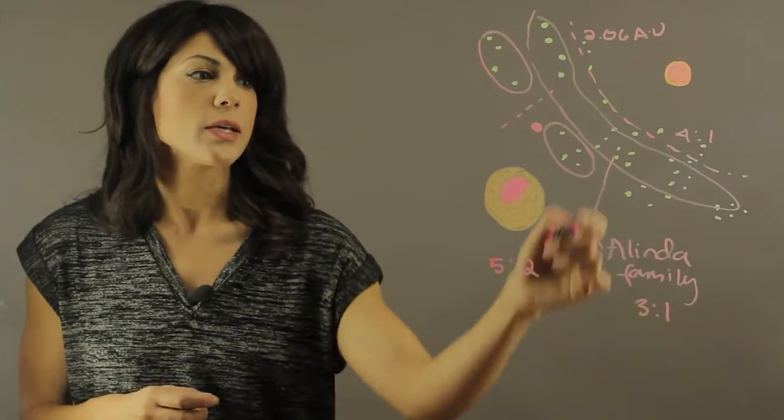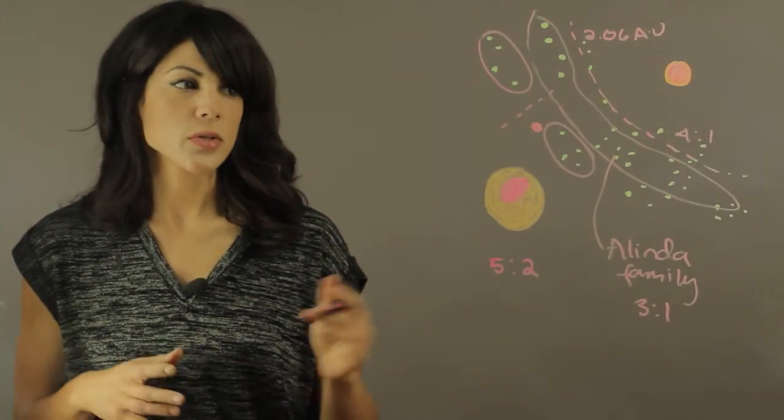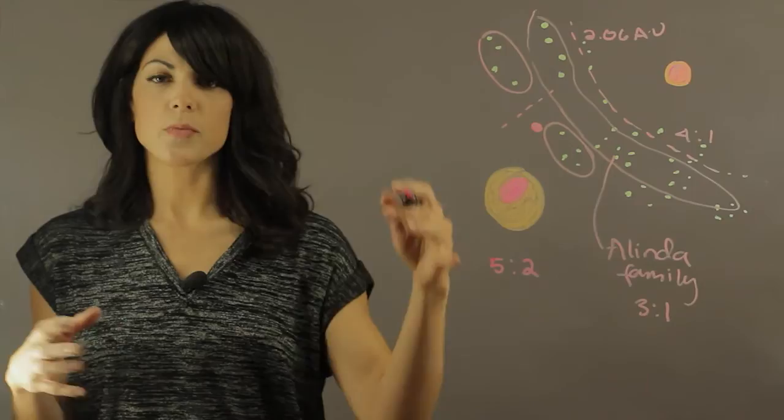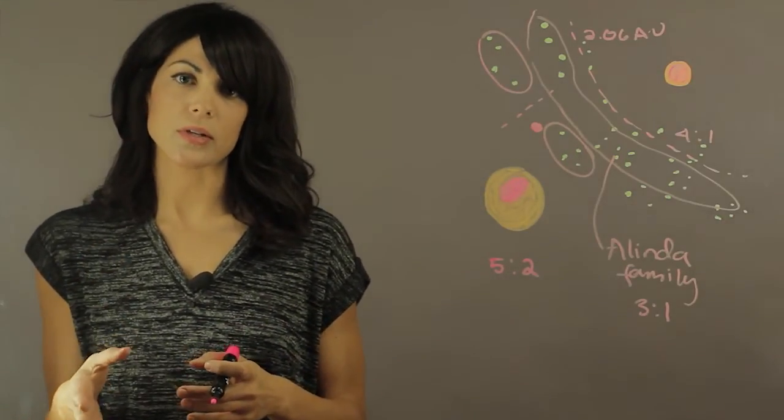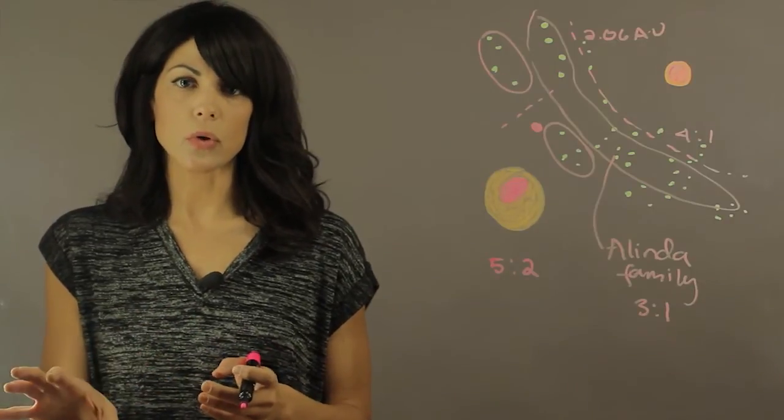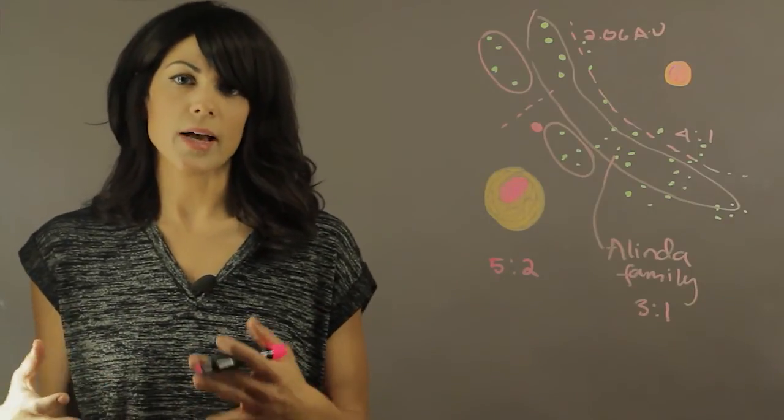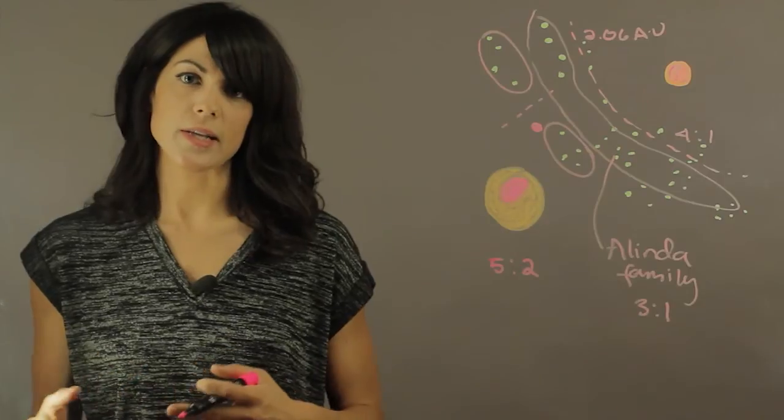And then the last one is 5 to 2. So as you can see, Jupiter sets up these gaps and sets up these places where you create orbital resonance, and that way it can control with its gravity the asteroids' position and the asteroids' path.